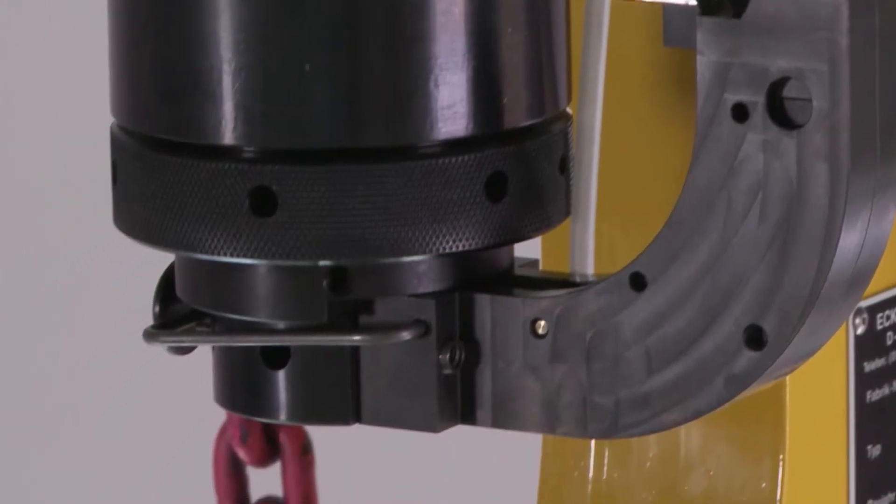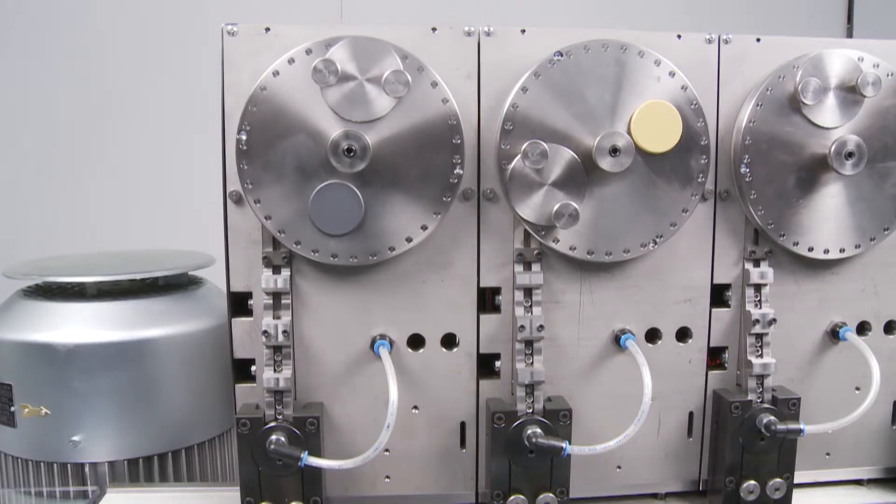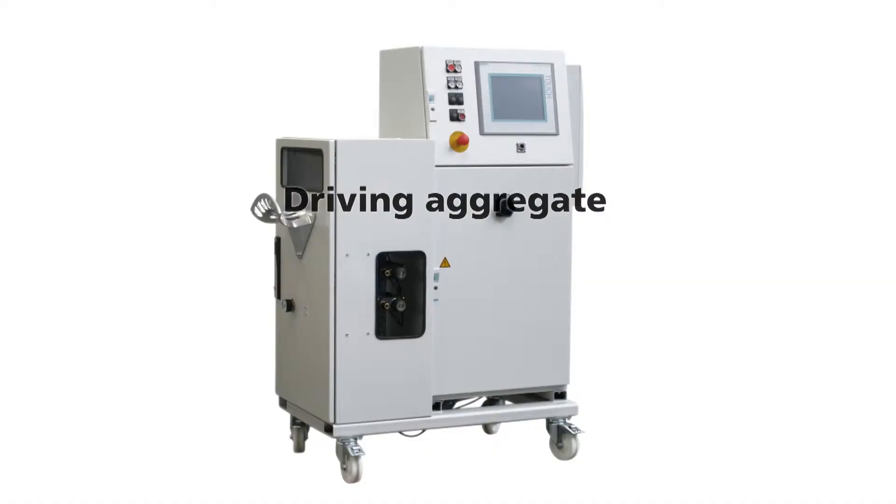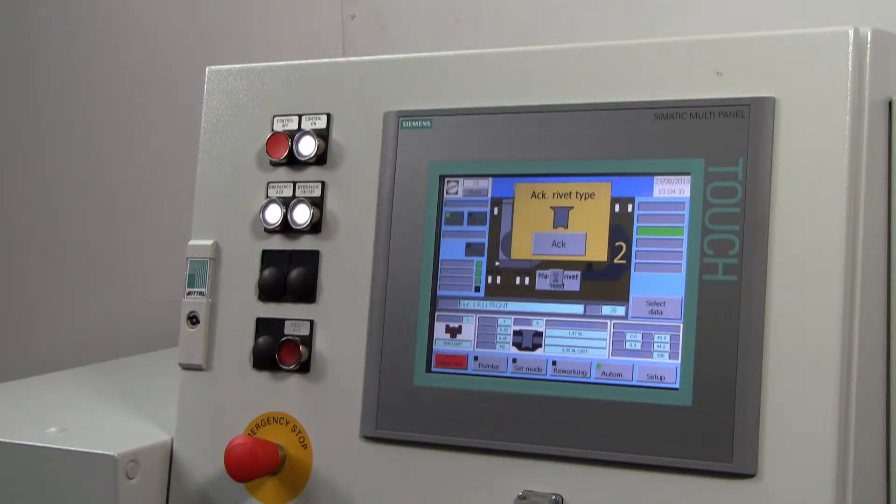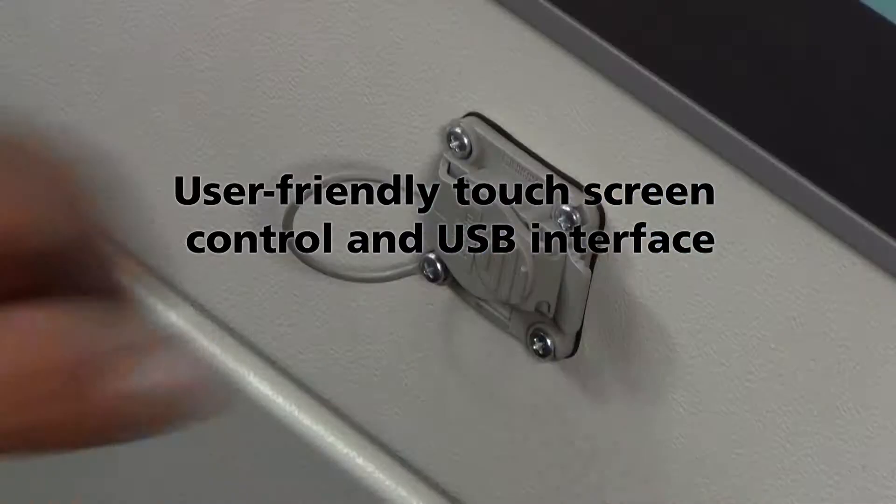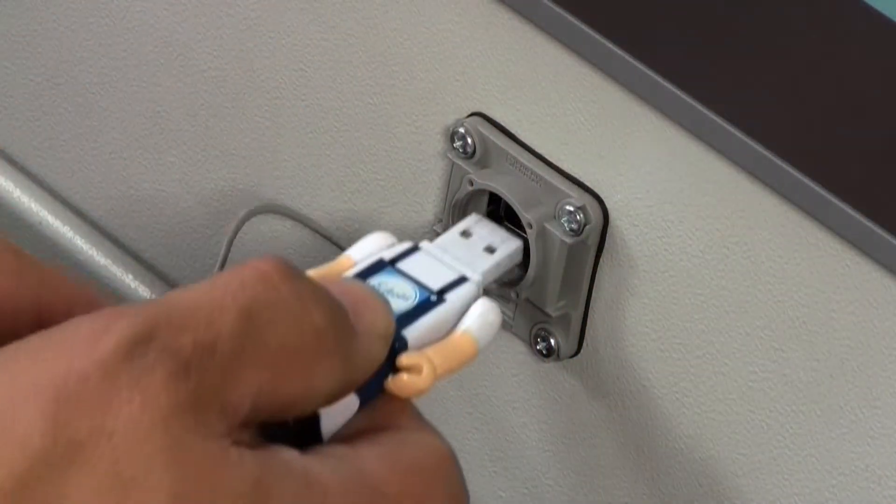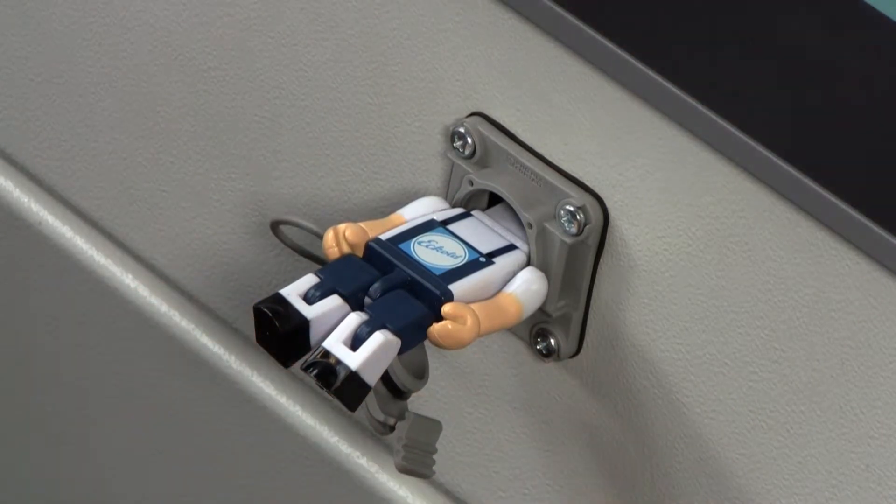It is thus possible to devise solutions that fit the actual site conditions, for example if there is limited space. The compact drive aggregate comes with a user-friendly touch screen. The USB interface allows for the exchange of data and user authorization.